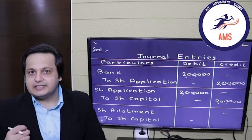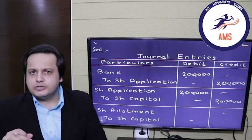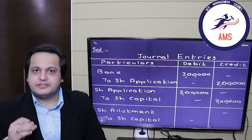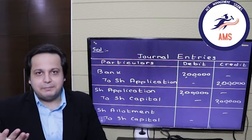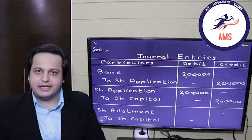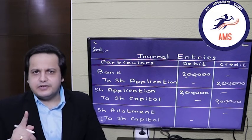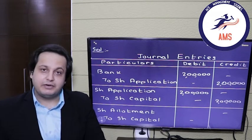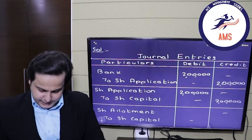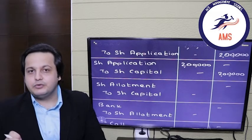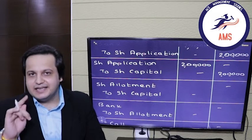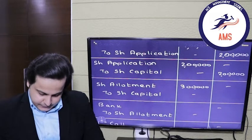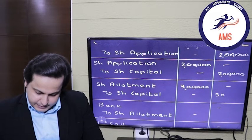Let's move forward with the next installment — allotment. From the allotment installment, a trend starts: firstly you make the money due or capitalize it, and then you receive the money. The first entry is making the allotment money due. It was rupees 3, so the entry is share allotment account debit to share capital — 1 lakh shares into rupees 3 equals 3 lakh rupees. Share allotment debited by 3 lakhs, share capital credited by 3 lakh rupees.